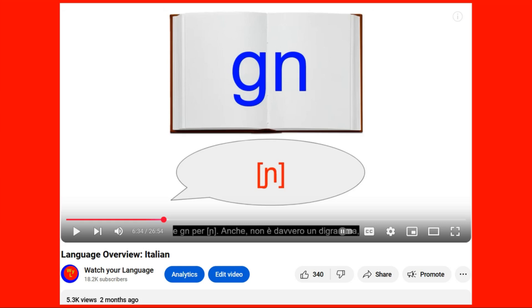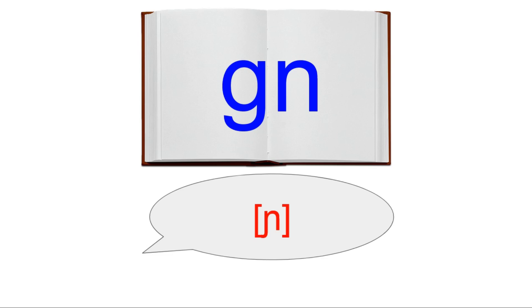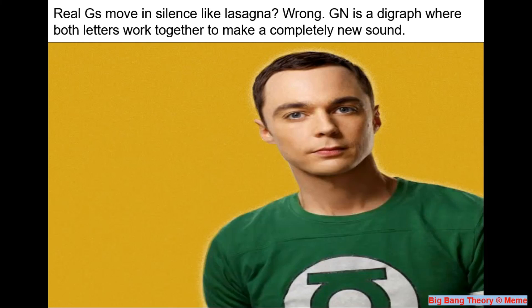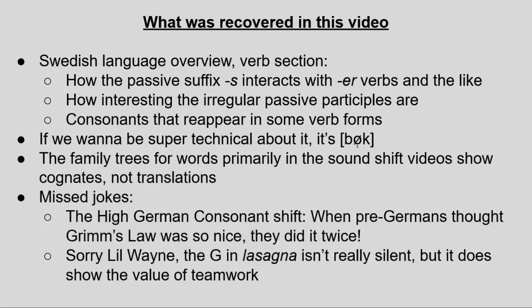In a similar fashion, in the Italian language overview when I was talking about digraphs — GN in particular — I forgot to mention that because it's a digraph making no G sound, Lil Wayne was technically inaccurate when he implied that the G in 'lasagna' is silent. Oh well, life goes on. So that's it — those are some things I either wish I'd included in previous videos or that I could have included for the sake of the nitpickers. Thanks for watching. I'll see y'all next time with some substantial content.